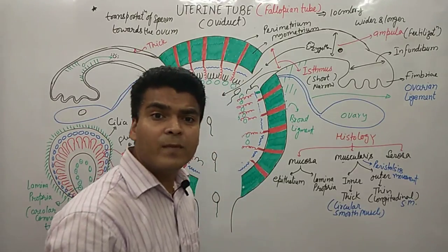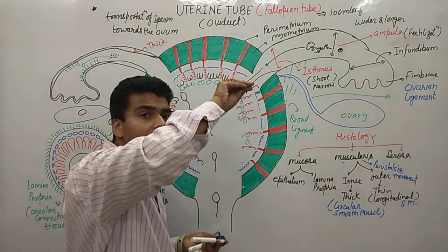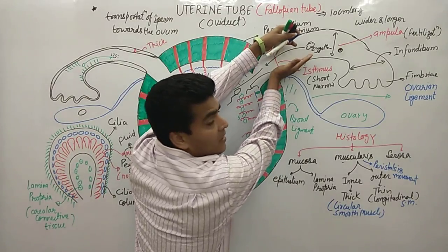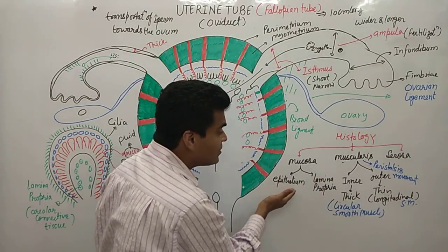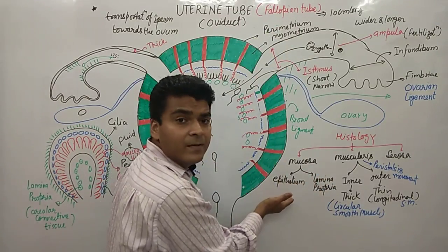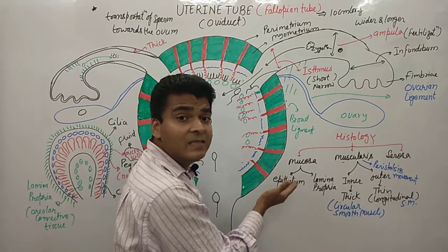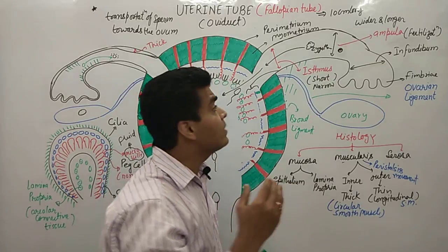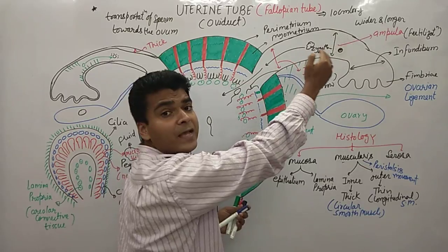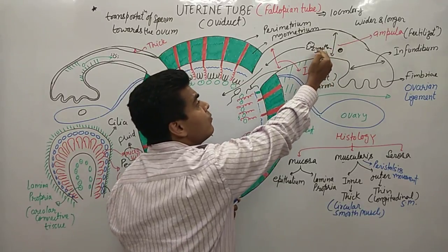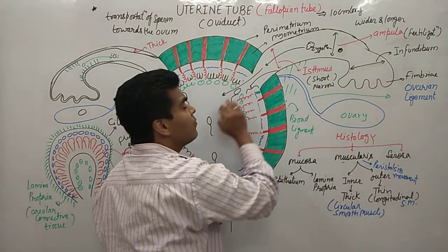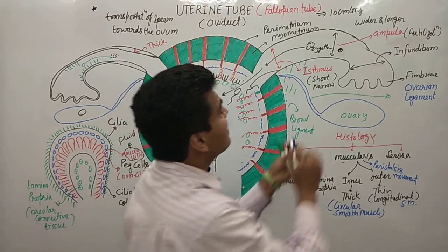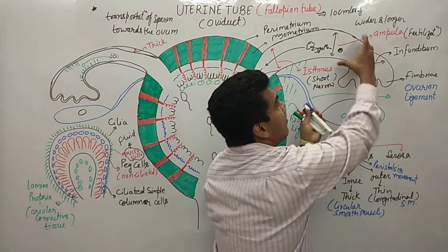This peristalsis movement helps in the movement of the fertilized ovum towards the uterus. Through muscle contraction in this direction, the fertilized ovum is moved toward the uterus.